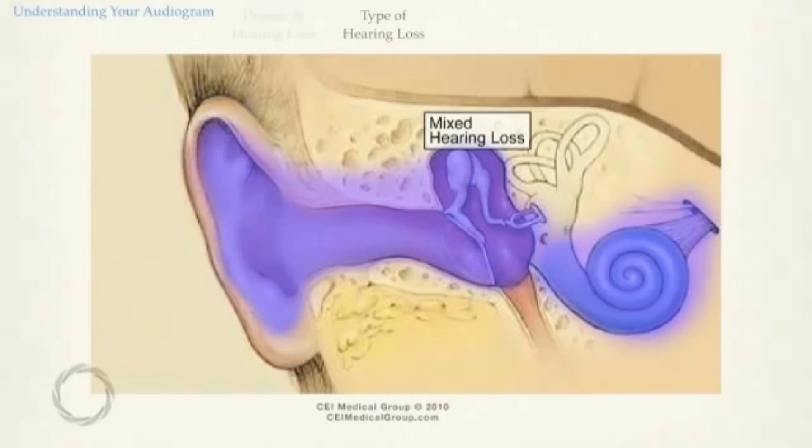Sometimes hearing loss can occur because of damage to both the inner and middle or outer ear. This type is called a mixed hearing loss.